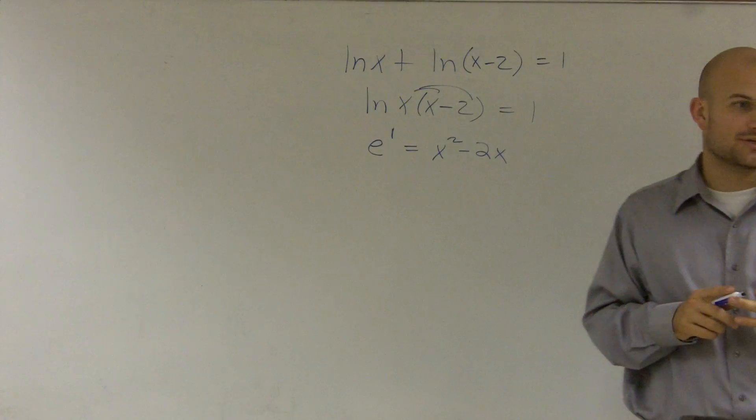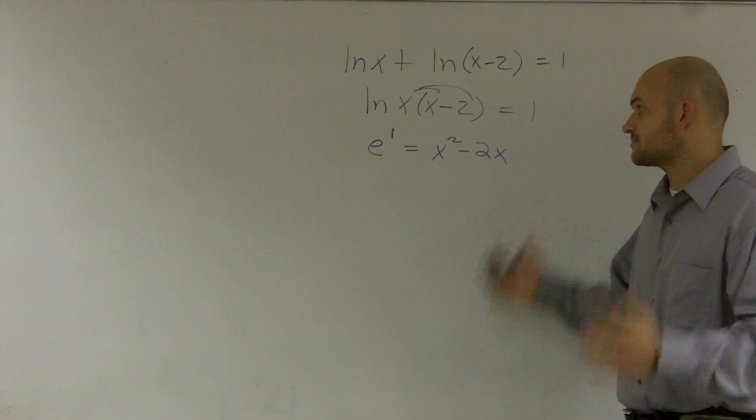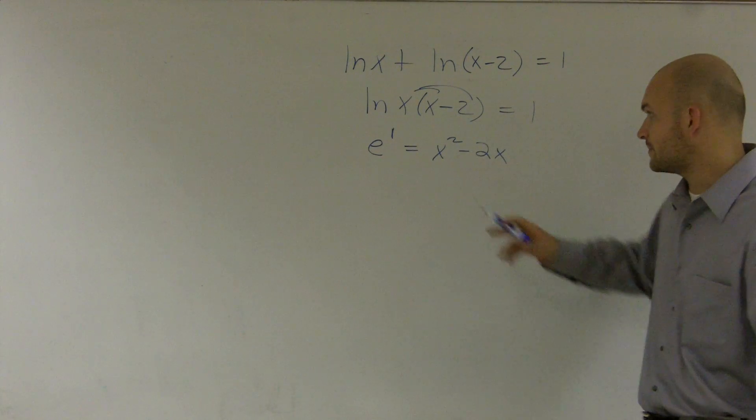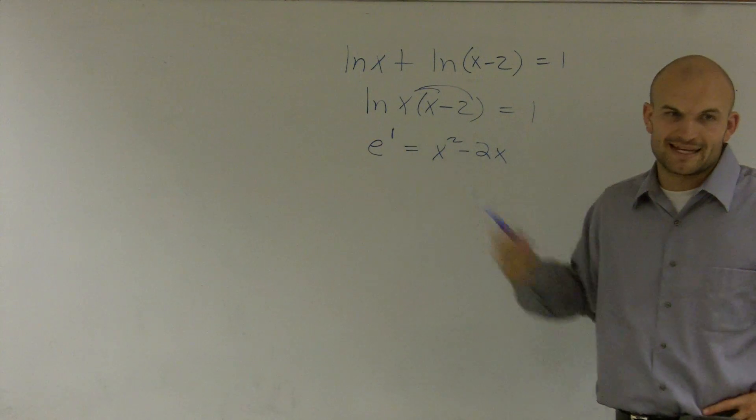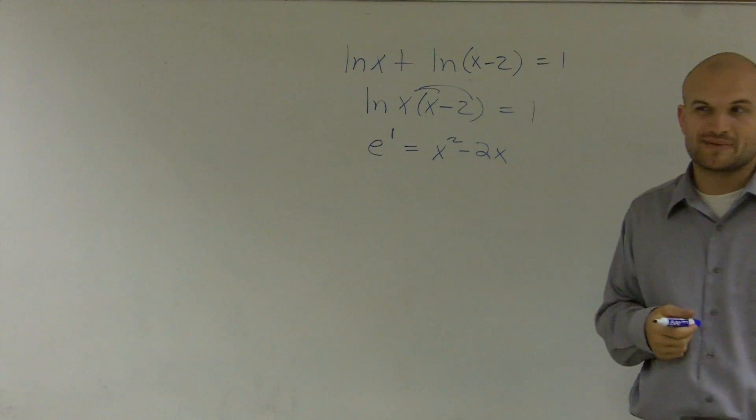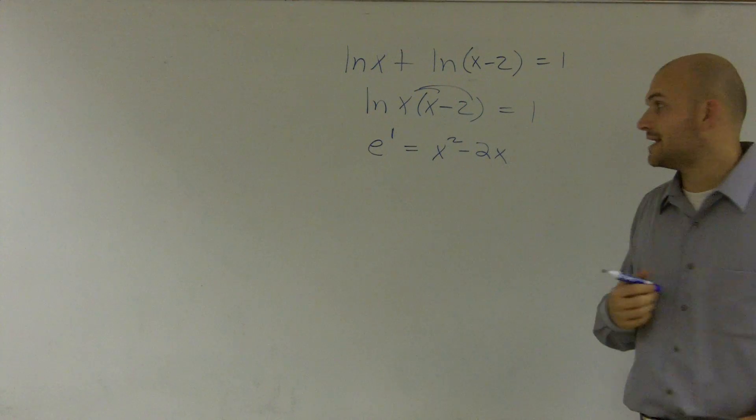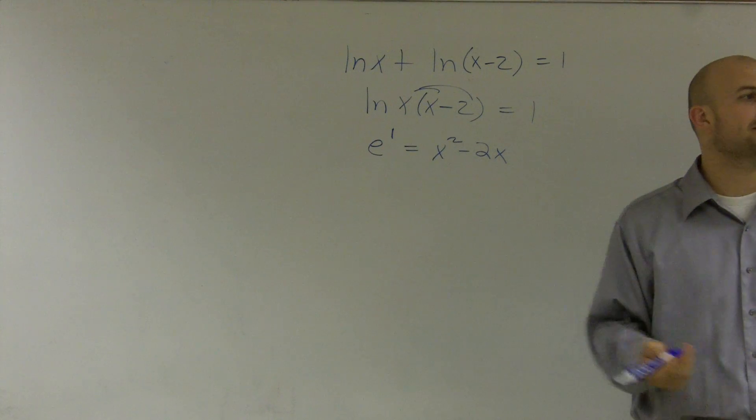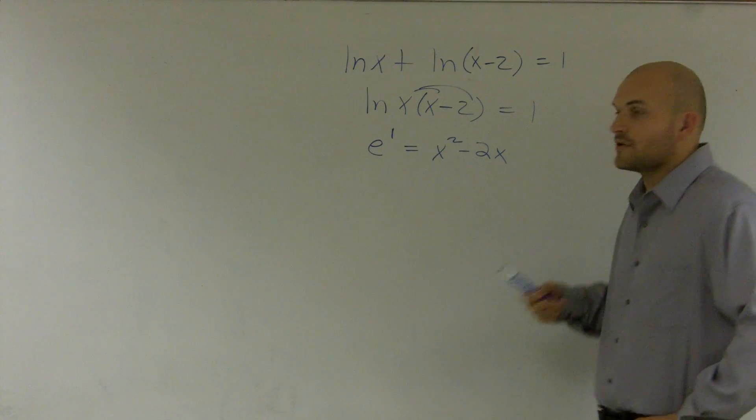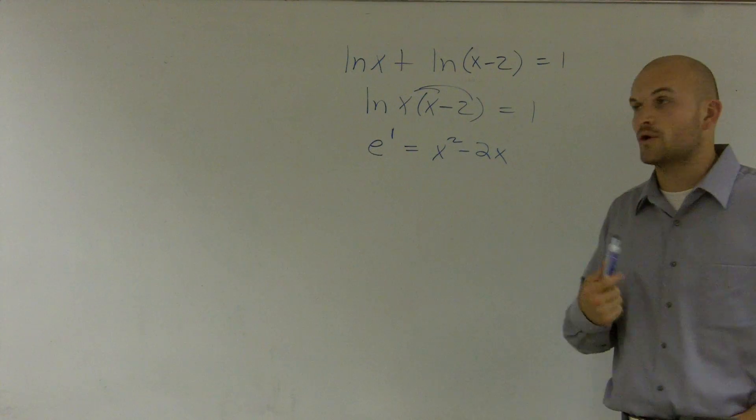So I have a couple options I could use. And for this one, I know factoring's not going to work, because I have to figure out two numbers that are going to multiply to give me e to the first power, which is e. Well, since e is an irrational number, that's going to be impossible. So therefore, I'm going to have to either use completing the square or quadratic formula.